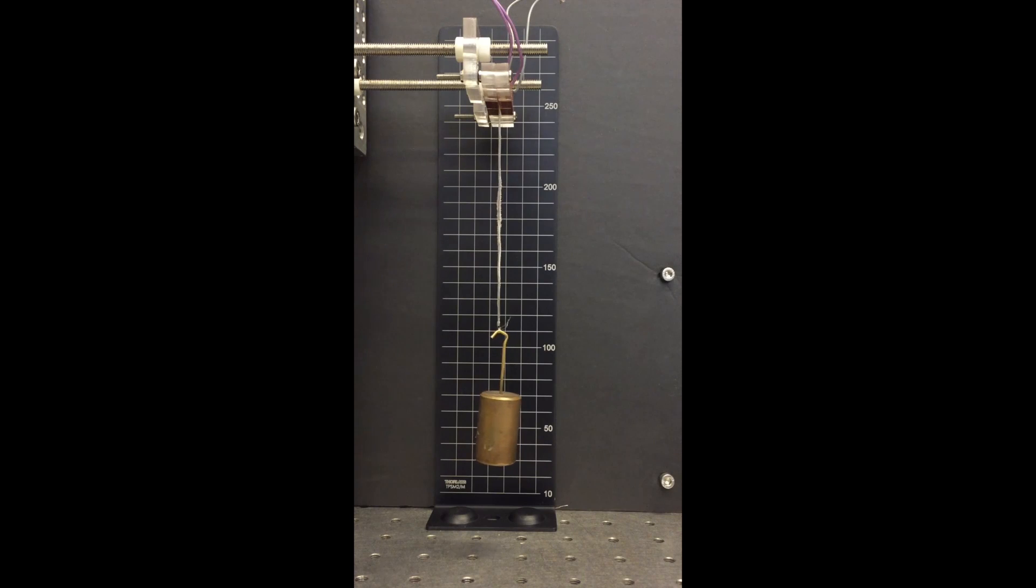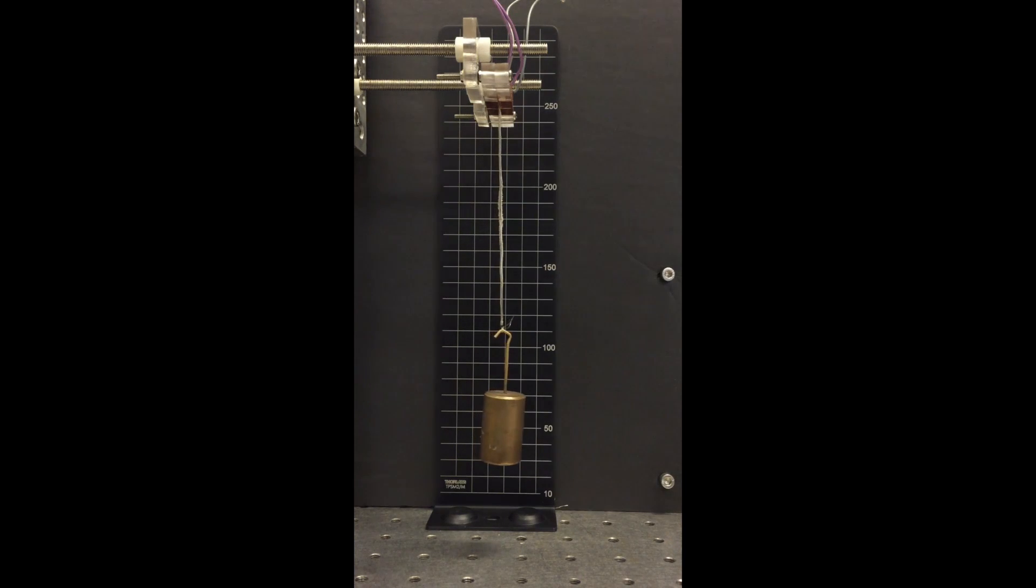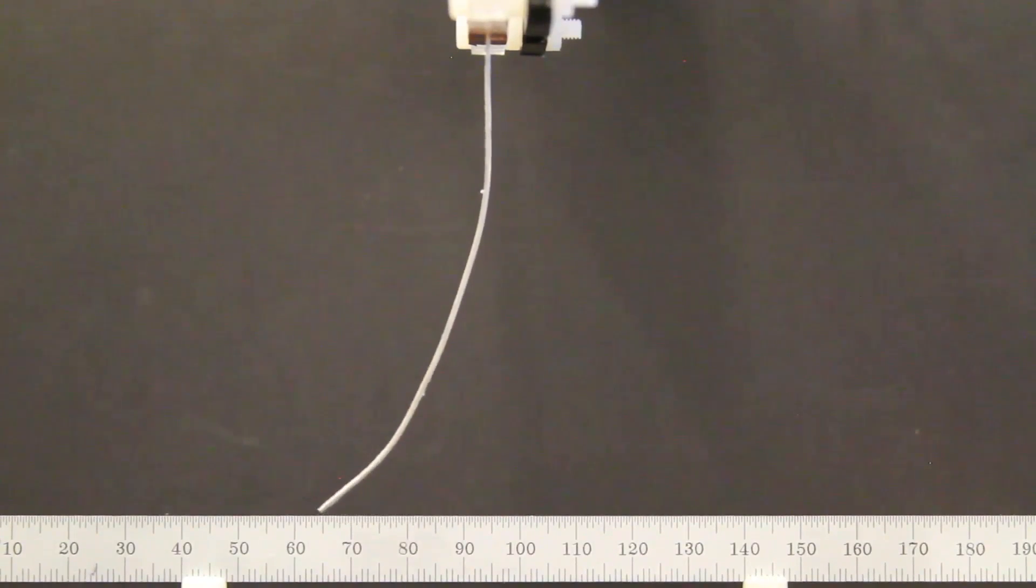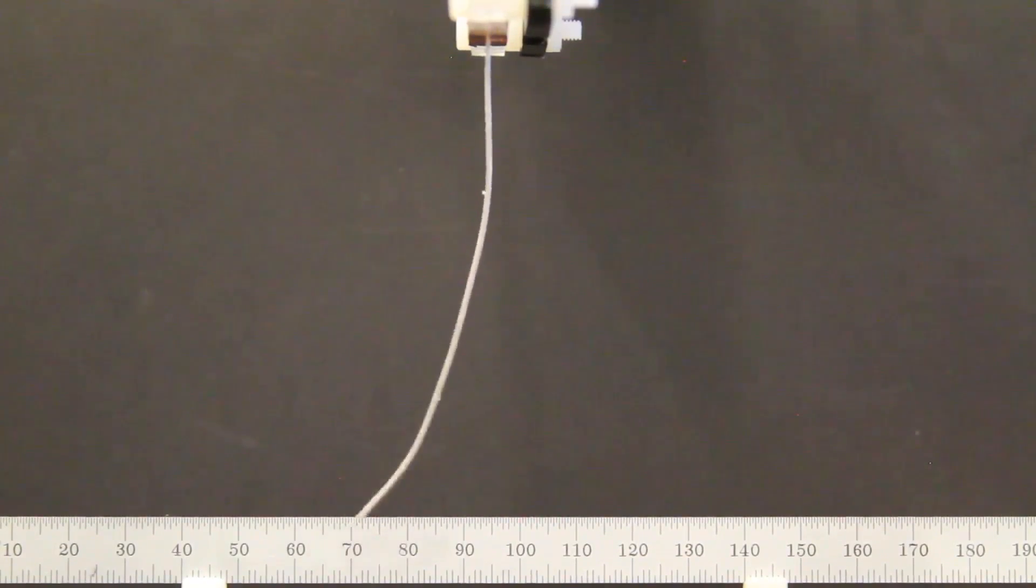However, now, a group of MIT researchers have come up with one of the simplest and lowest-cost systems yet, in which a material reproduces some of the bending motions that natural muscle tissues perform regularly. The key ingredient? Nylon fiber.